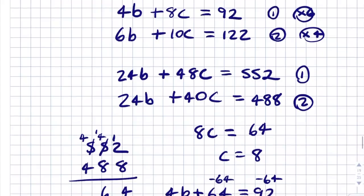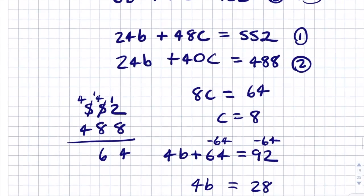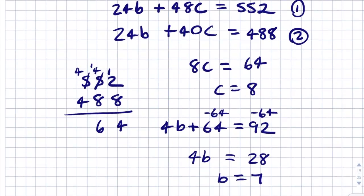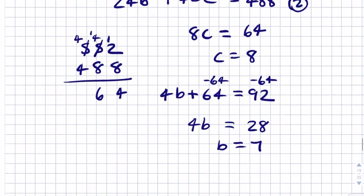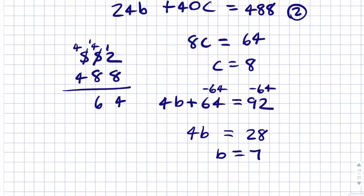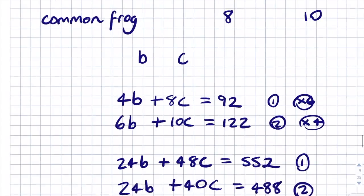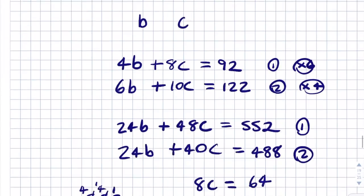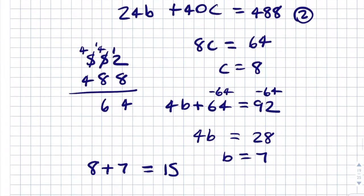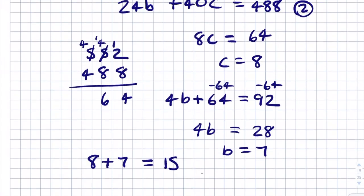So there are 8 common frogs and 7 brachycyphilus frogs in the bucket, giving a total of 8 + 7 = 15 frogs. The answer is 15, which is answer A.